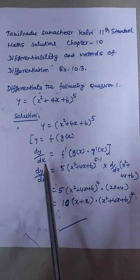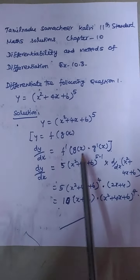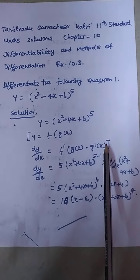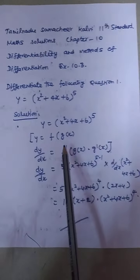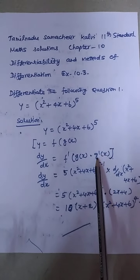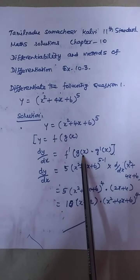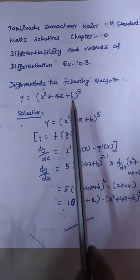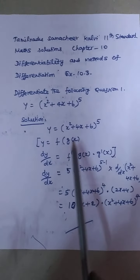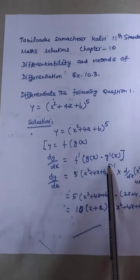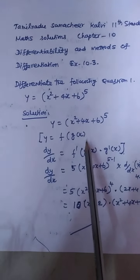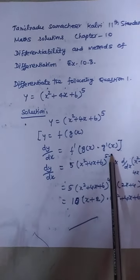By the chain rule, dy/dx is equal to f′(g(x)) · g′(x). Here g′(x) is the derivative of g(x) = x² + 4x + 6, and f′(g(x)) is the outer derivative evaluated at g(x).